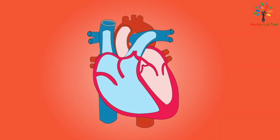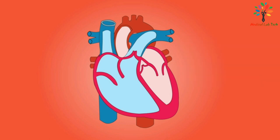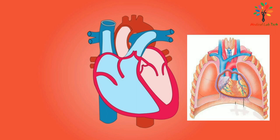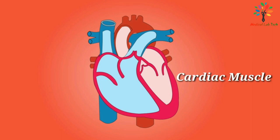Hello viewers, I am Anaranjan Berman and I'm going to discuss briefly about the anatomy of the heart. The heart is a hollow muscular organ; the size of your heart is the same as the size of your fist. Your heart lies in the thoracic cavity in the mediastinum. The mediastinum is a space between the two lungs. The heart has a base above and an apex below.